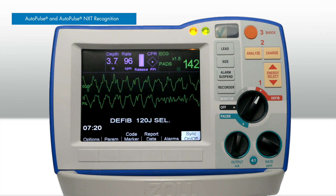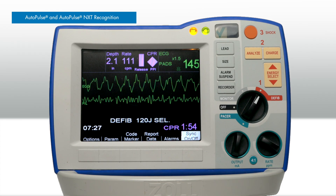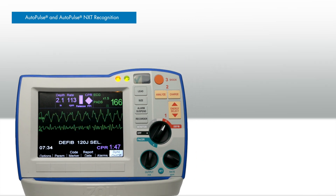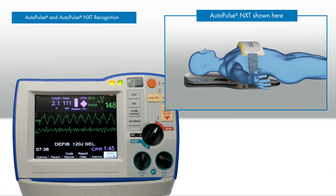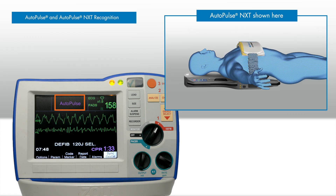The new AutoPulse recognition algorithm automatically detects AutoPulse or AutoPulse NXT resuscitation system compressions when using the R-Series monitor defibrillator with authorized Zoll CPR electrodes. When the R-Series ALS or R-Series Plus detects the AutoPulse signature compression, the on-screen CPR feedback adjusts to display AutoPulse in the CPR dashboard, and audio prompts for the depth of compression are suppressed.